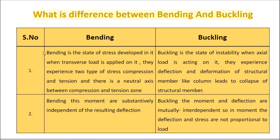What is the difference between bending and buckling? Point 1: Bending is the state of stress developed when a transverse load is applied on it. The member experiences two types of stress — compression and tension — and there is a neutral axis between the compression and tension zones. Buckling is the state of instability when axial load is acting on it; it causes deflection and deformation of structural members like columns, leading to collapse.